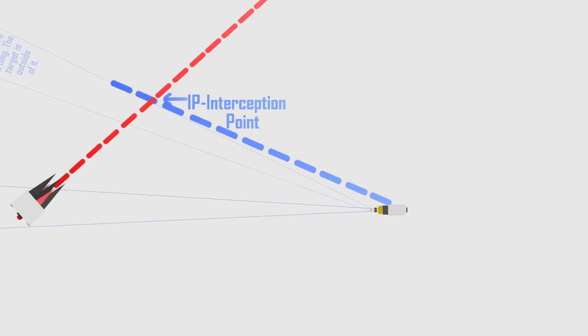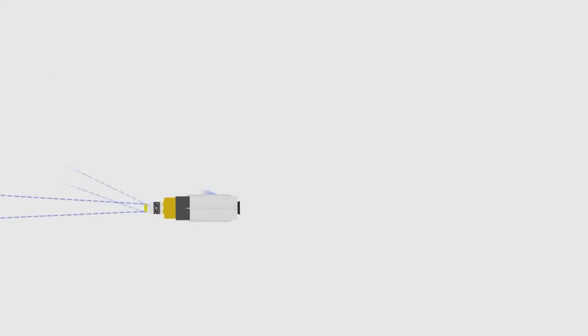10 seconds later, the second pulse burns out and the missile turns towards the current position of the target to allow the IR seeker to acquire it. The KV is then separated and moves towards the target.